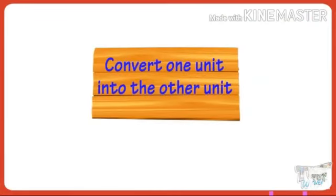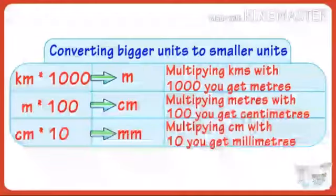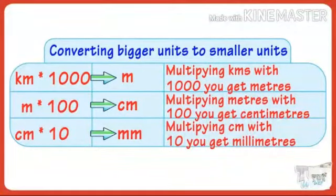Now we can start our conversion. While we are converting higher unit into lower unit and lower unit into higher unit, we use two different math operations. When converting from a higher unit to a smaller unit, we multiply. Kilometer into meter: multiply by 1000. Meter into centimeter: multiply by 100. Centimeter into millimeter: multiply by 10.